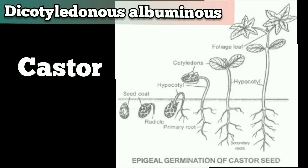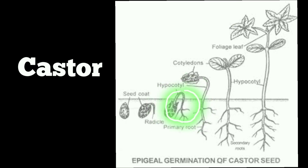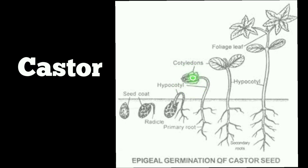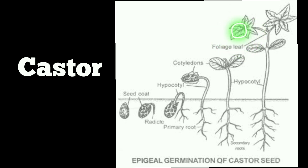In the case of castor, the shell-like testa first bursts near the crinkle and the radicle grows out. Subsequent growth of the hypocotyl pulls out of the soil the two thin cotyledons enclosed in the endosperm. The testa is cracked and is soon shed. The cotyledons then open up and become green and leafy while the plumule slowly develops into the leafy shoot. The remnant of the endosperm withers and drops off.